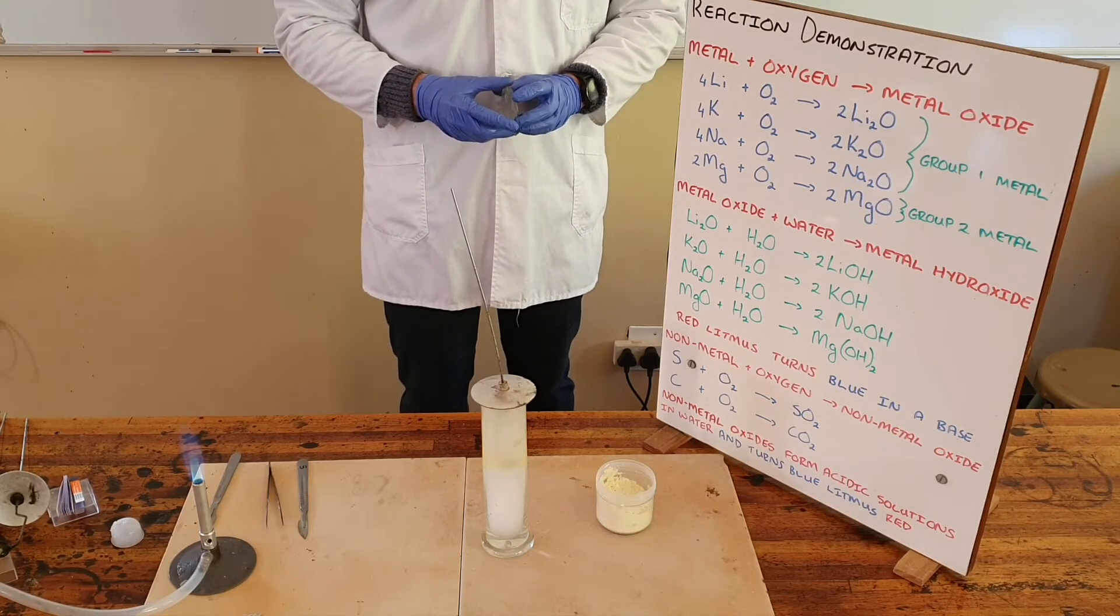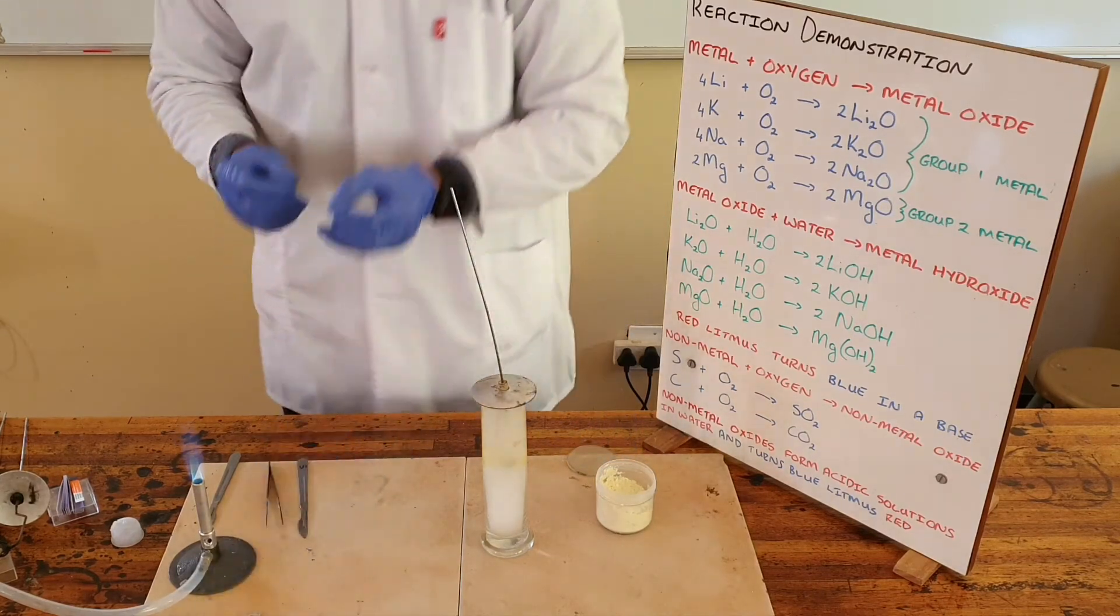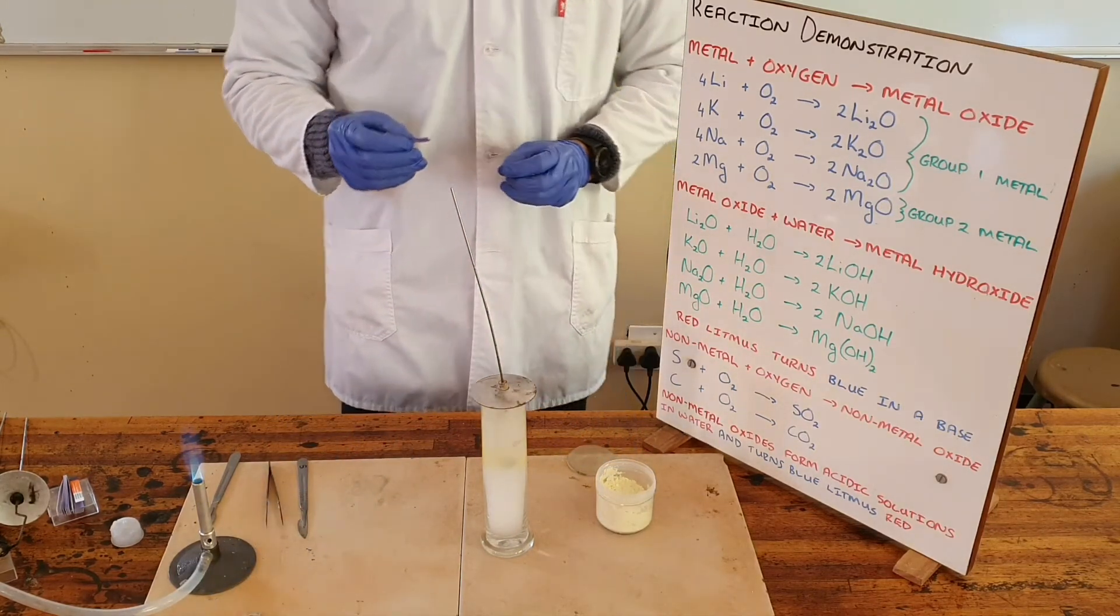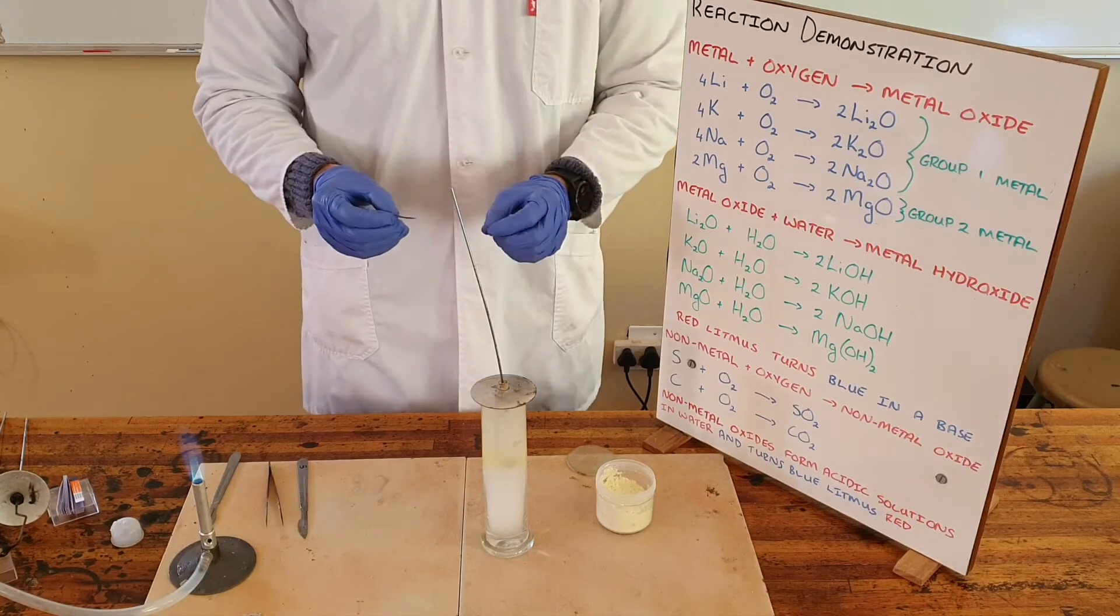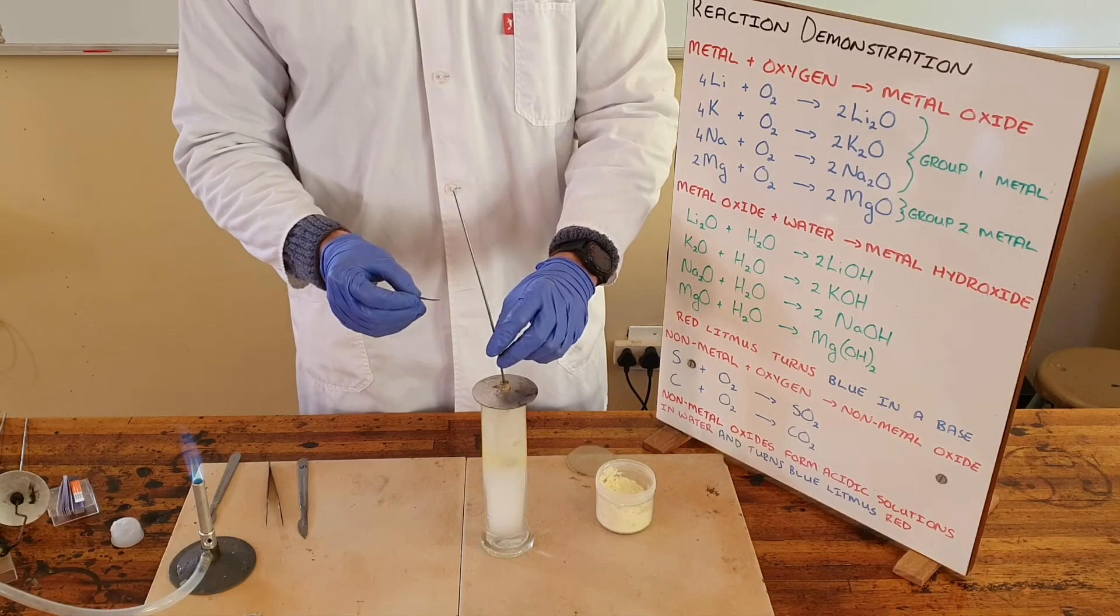We can demonstrate this by adding a piece of blue litmus paper. We know that blue litmus would turn red in the presence of an acidic solution, which we can show here.